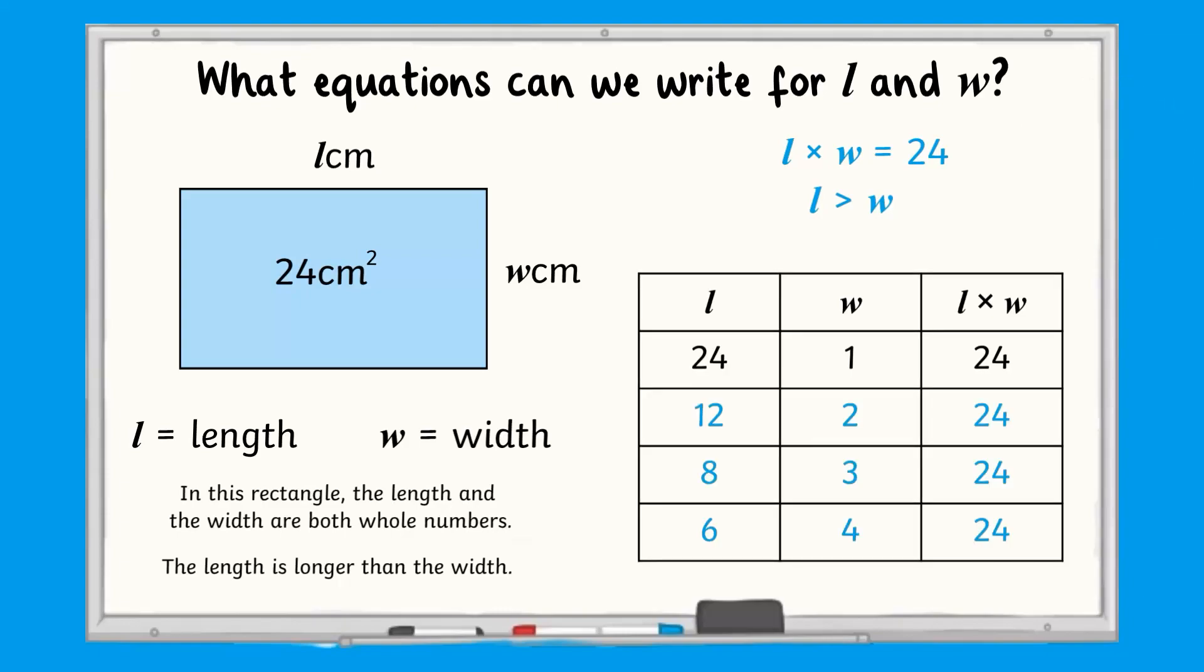Here are all the possibilities for the values of l and w. You should have used your times table knowledge to work out which numbers multiplied together to make 24, and then use the pairs of numbers where l was greater than w.